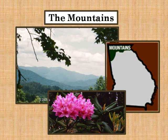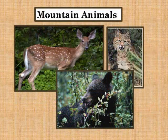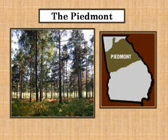Plants in the mountain region include oak forests, evergreens, rhododendrons, and mountain laurel. Animals in the mountain habitat include white-tailed deer, black bears, bobcats, and great horned owls.